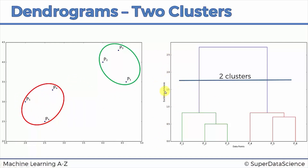Let's say this bar is at 1.5 and this one is at 2.0. If we set the threshold at 1.7, we are not allowing any clusters that would have dissimilarity greater than 1.7 within them. Everything below that level — this cluster and this cluster — don't have dissimilarity above 1.7. You can quickly tell how many clusters you'll have by counting how many vertical lines the horizontal threshold crosses. Here it crosses two vertical lines, meaning we get two clusters: p1, p2, p3 in one, and p4, p5, p6 in the other.